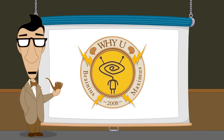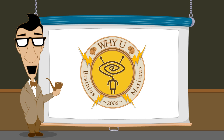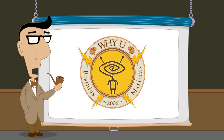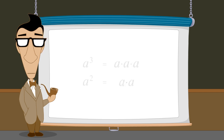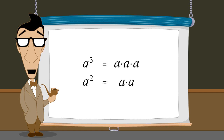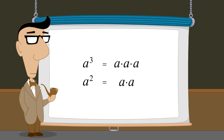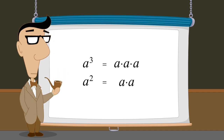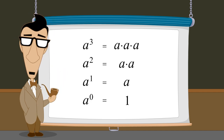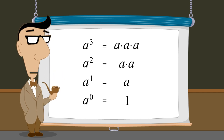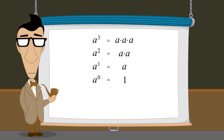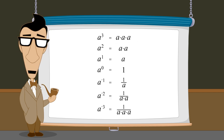Hello, I'm Professor Von Schmohawk and welcome to Why U. When we first introduced the concept of exponents, we started by defining integer exponents of two or greater as the number of copies of the base which are multiplied together. We then used the rules we derived for combining exponents to figure out what the meaning of an exponent of one or zero would be, as well as the meaning of negative integer exponents.